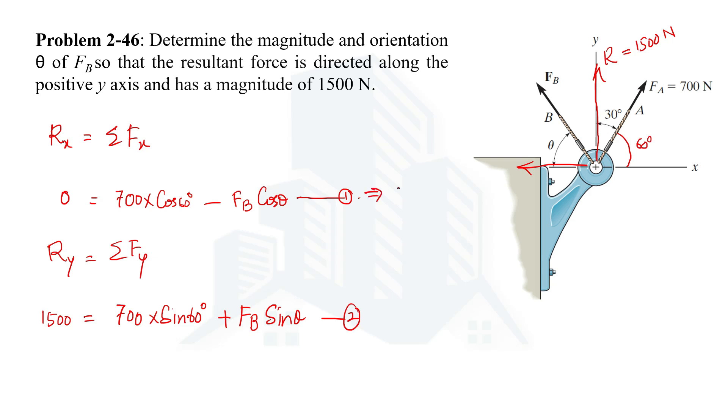From equation 1 we have Fb cos theta equal to 350. From equation 2 we have Fb sin theta equal to 893.8.